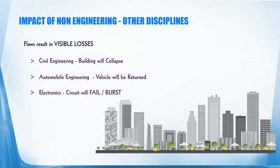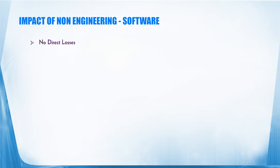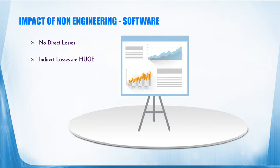What happens when a building is constructed without proper engineering? The building will collapse before your eyes. Likewise, take electronics — nowadays you are seeing a lot of mobile phones heating up and failing. Why? It is because of non-engineering in electronics. Likewise, in software engineering, there is no direct loss because it is rather intangible. But having said this, indirect losses are really huge.